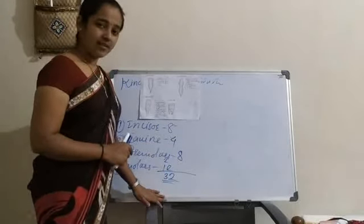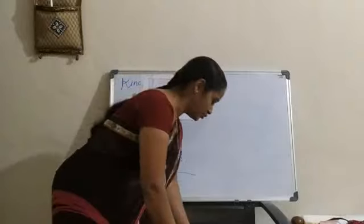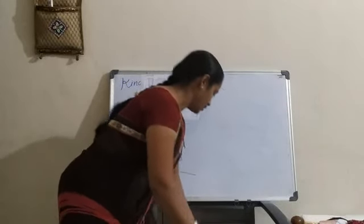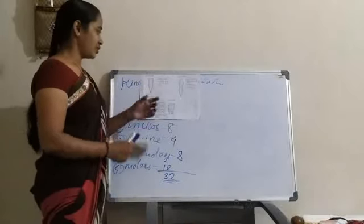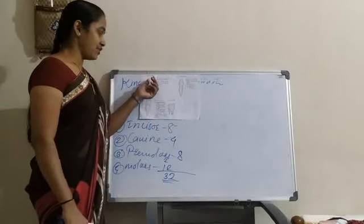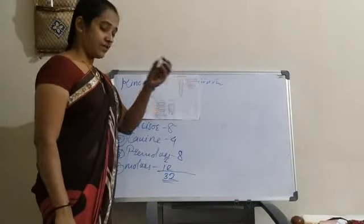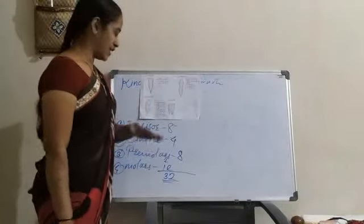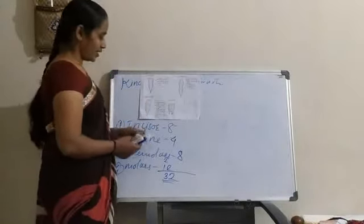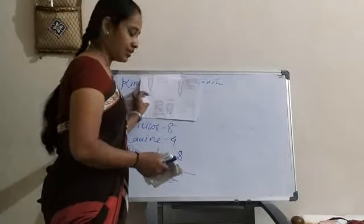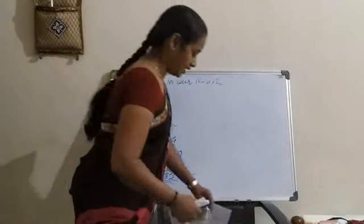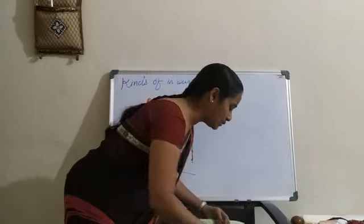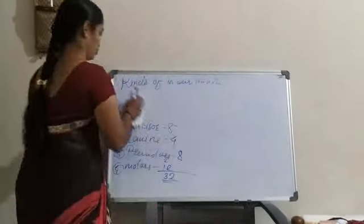So collectively we have 32 teeth in our mouth. This is about the types of teeth. We can see how the structure is different: for cutting teeth they have sharp edges, for tearing teeth they have pointed tips, and for grinding teeth they have a flat and wide surface for grinding the food properly. That is how we have different teeth in our mouth — 32 teeth in total, of 4 different types.